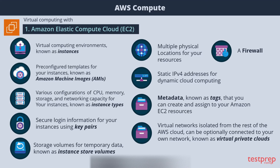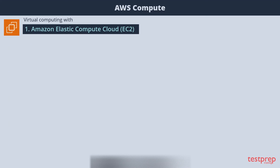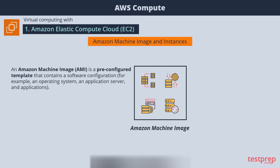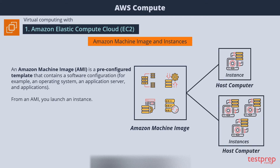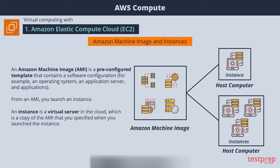Let's take a look at Amazon EC2 basic infrastructure. First is Amazon Machine Image and instances. An Amazon Machine Image is a template that contains a software configuration — for example, an operating system, an application server, and applications. From an AMI, you launch an instance. An instance is a virtual server in the cloud, which is a copy of the AMI you specified when you launched it. You can launch multiple instances of an AMI, or create your own custom AMIs, enabling you to quickly start new instances that have everything you need.